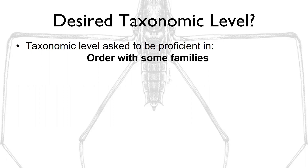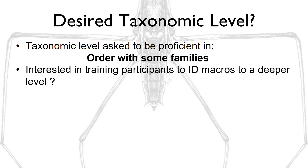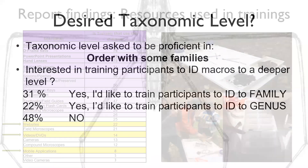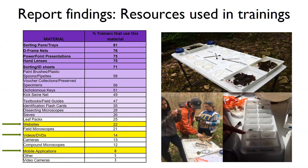Briefly, some of those findings: regarding desired level of ID, most trainers asked their trainees or volunteers to ID to the level of order with some families. When asked whether they'd like to train volunteers at a deeper taxonomic level, we got a mixed response — half were comfortable where they were, and the other half wished to go at least to family level, if not deeper to genus. With these results, the site is very helpful to family level, and all insect specimens on the site are identified to genus level, though the collection is not exhaustive for all of eastern North America.